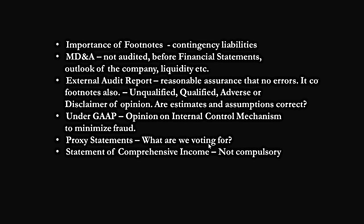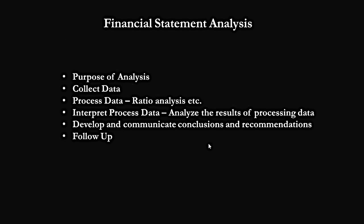Another financial statement is the proxy statement. It tells you what the shareholders are voting for. The company has to send a proxy statement to the SEC in the U.S., or a similar authority in other countries, disclosing items such as director compensation. The last statement is the statement of comprehensive income, which is not compulsory under IFRS or U.S. GAAP but deals with how necessary entries are made alongside the income statement.